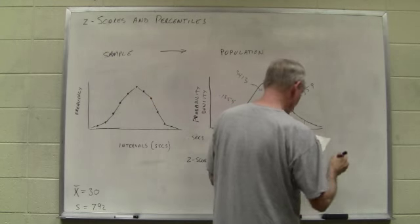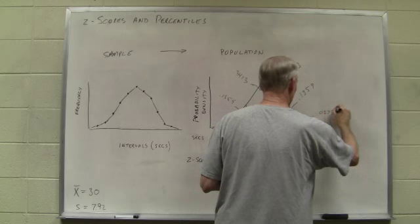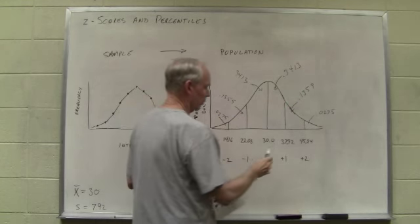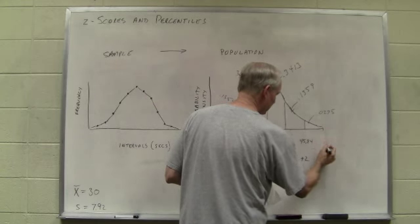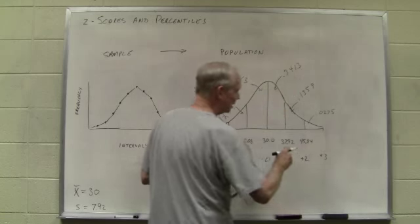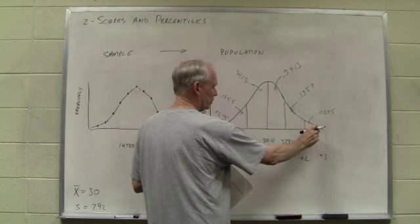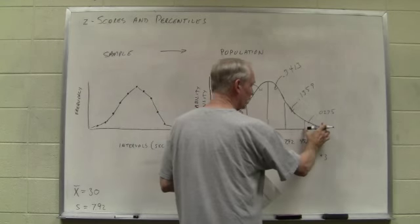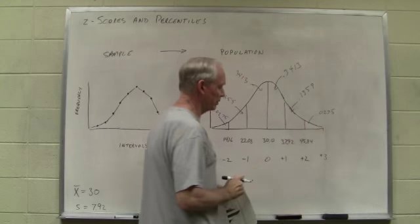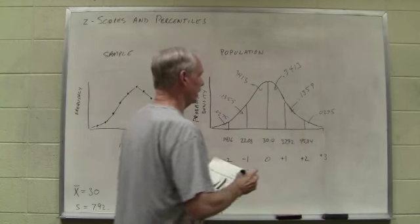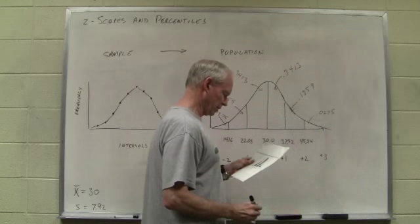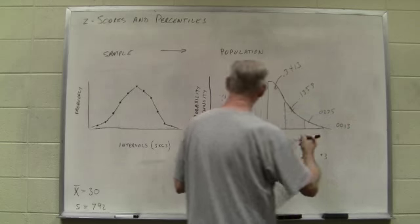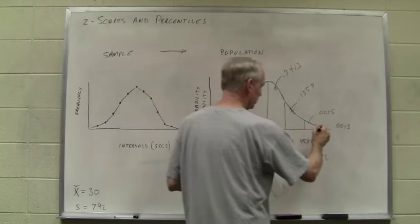This one is 0.0275, as is this one. In other words, if you were to look between two standard deviations above the mean and three standard deviations above the mean, you would get this small proportion of scores, 0.0275. And finally, there is some chance you get something even beyond that, although it's pretty low, 0.0013. And that's true over here, as well, but I don't have enough room to write that in.